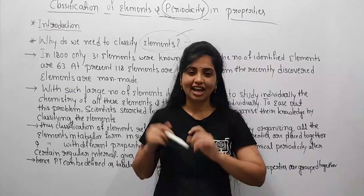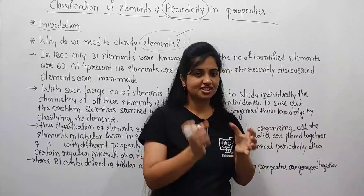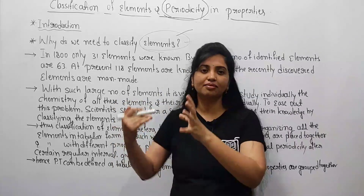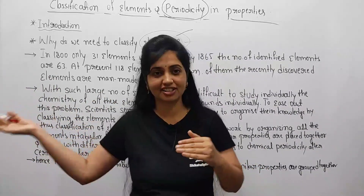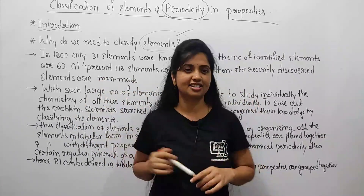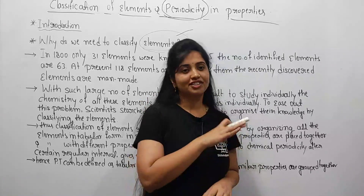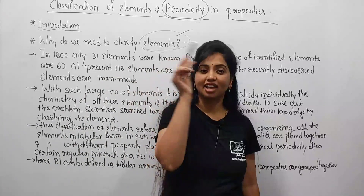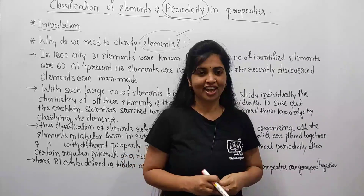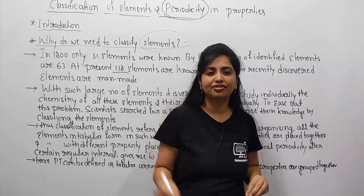I wish to ask you one question: if you go to a library, how are the books arranged there? The books are arranged in separate tracks — one track for chemistry, one for physics, one for mathematics, biology, geology, botany, history, political science, and so on. All related books are arranged neatly in separate sections. If instead all those thousands of books were piled together in one place, it would be very difficult to find the book you want.